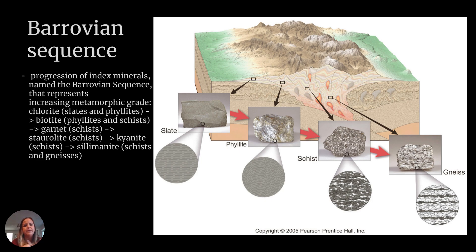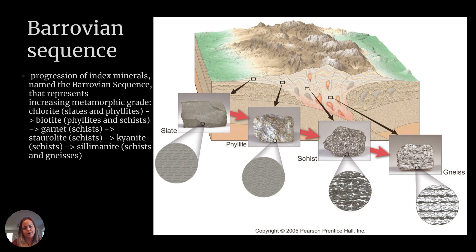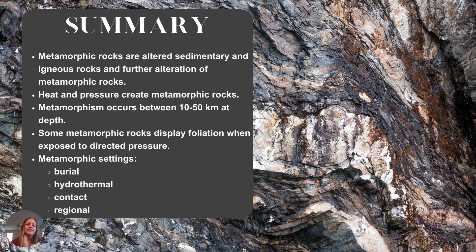The Barrovian sequence shows the progression of index minerals through crustal depth for foliated metamorphic rocks. From closest to the surface going deeper: slate, then phyllite, then schist, then gneiss. Gneiss is our highest-grade foliated metamorphic rock, and slate is our lowest grade. In summary: metamorphic rocks form from altered sedimentary, igneous, or existing metamorphic rocks; heat and pressure create them between 10 and 50 kilometers depth; some rocks display foliation and some do not; and the settings include burial, contact, hydrothermal, regional, fault, and shock metamorphism.